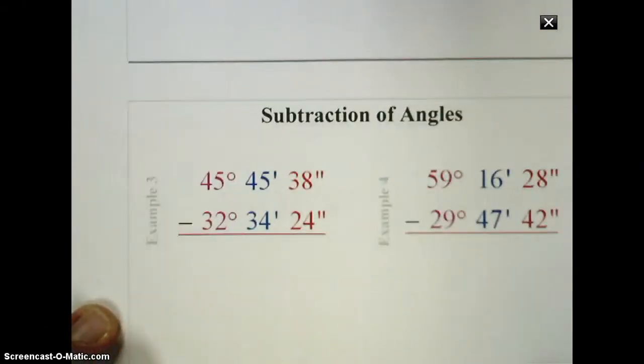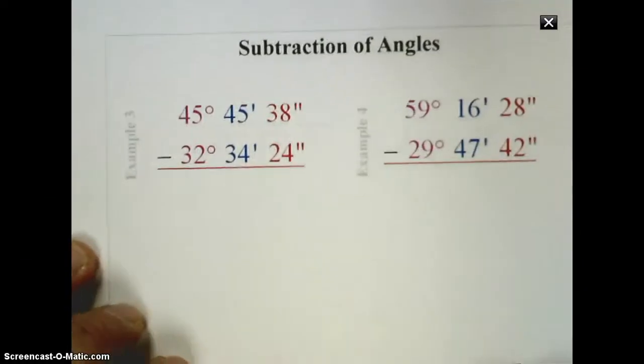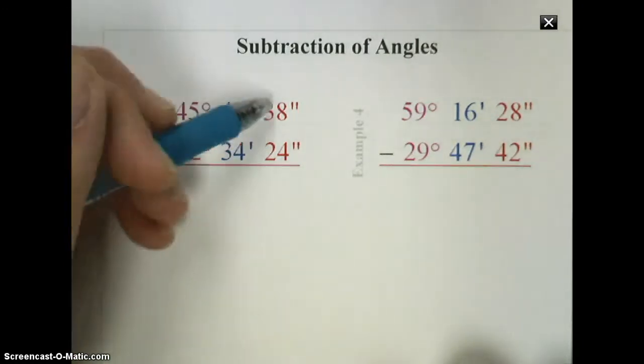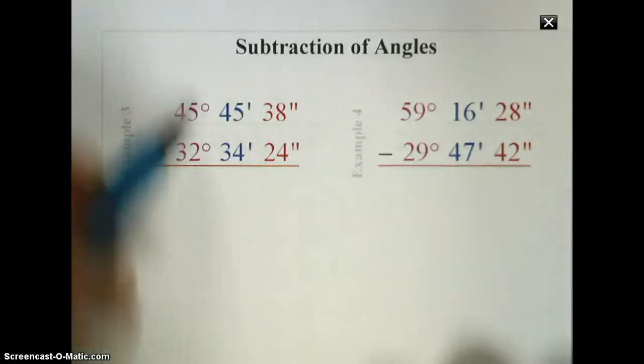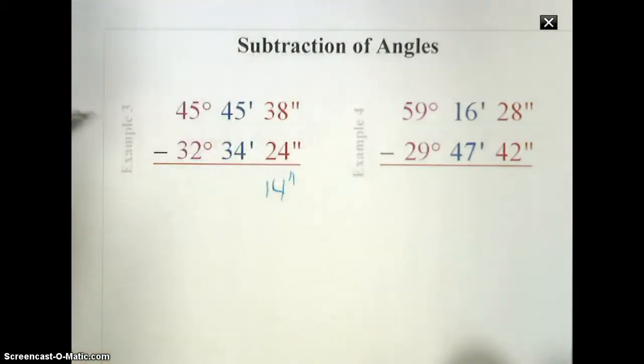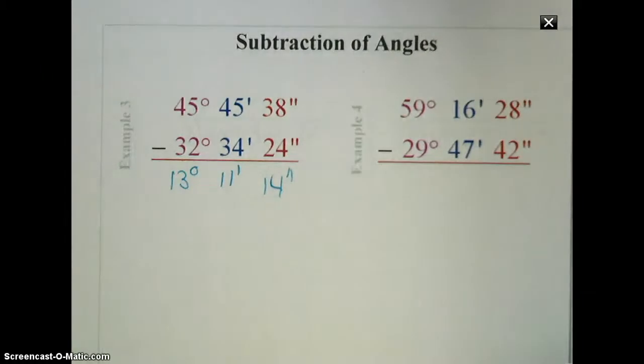If we go to subtraction, we're going to have the same sort of issue, except the problem is going to lie in the beginning of the problem, rather than the end. So if we look at a first, a simpler subtraction problem, you just, again, subtract seconds with seconds, minutes with minutes, and degrees with degrees. So here I'm going to get 14 seconds, I'm going to get 11 minutes, and I'm going to get 13 degrees. So quite simply, that's all you need to do for this problem.